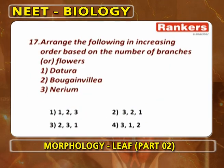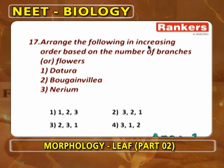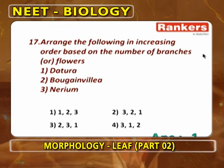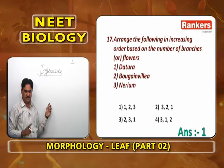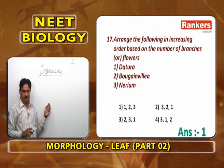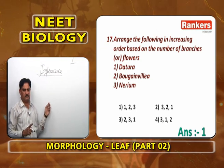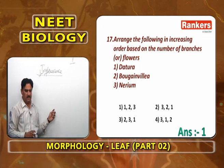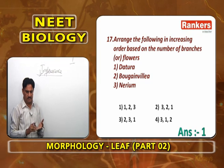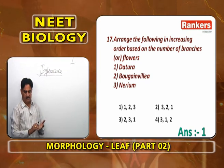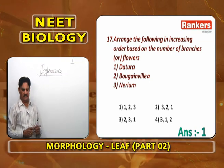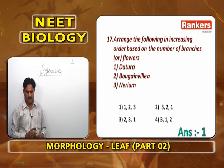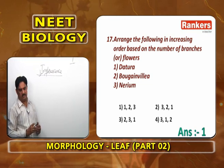Next: arrange in increasing order based on number of branches. Datura is solitary cyme — zero branches. Bougainvillea: after the main axis ends as a flower, two branches develop — two branches. Nerium: many branches. So increasing order: Datura (0), Bougainvillea (2), Nerium (many). Answer: 1, 2, 3.